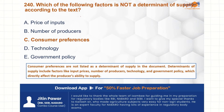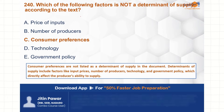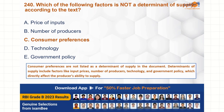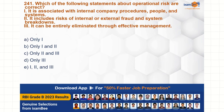In the last question we were discussing about which of the following factors is not a determinant of supply according to the text. Consumer preferences — option C is the correct choice here. Next question.